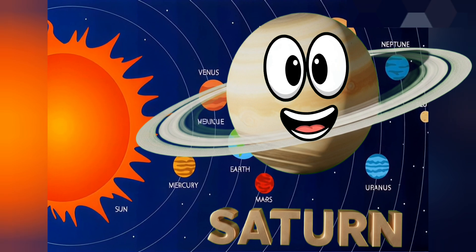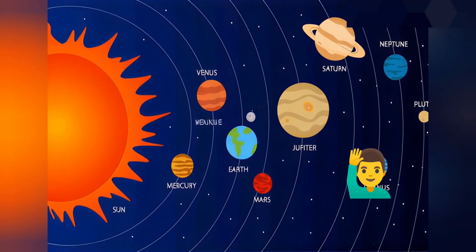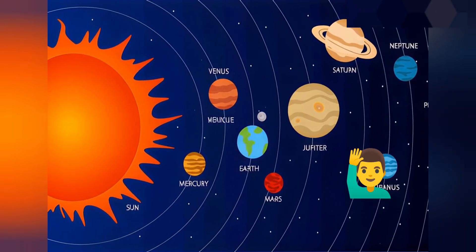Uranus, Uranus, Uranus, where are you? Here I am, here I am, sky so blue. I'm Uranus, planet seven. I spin sideways under heaven.